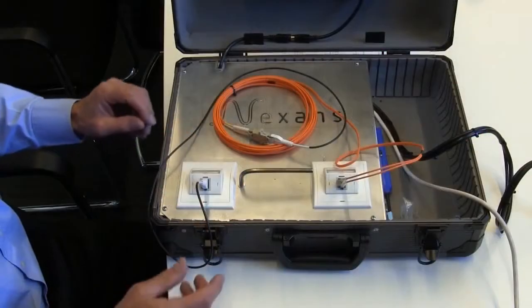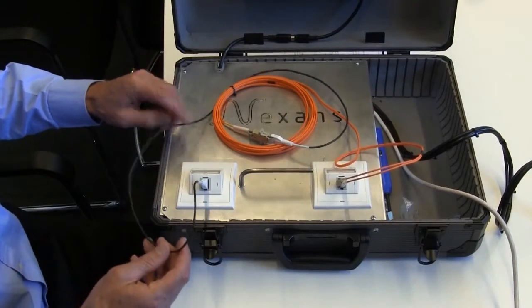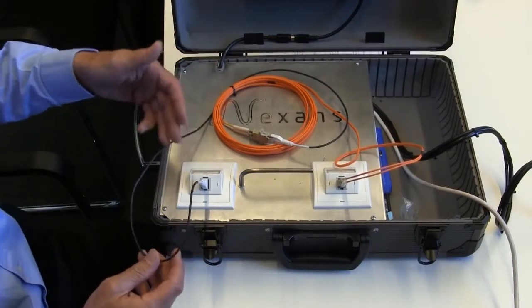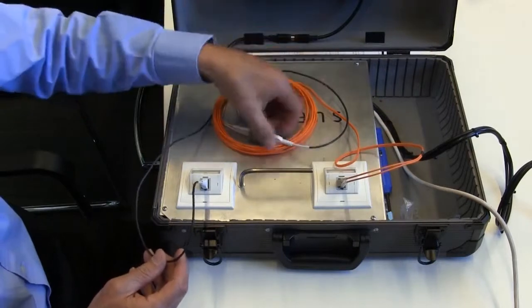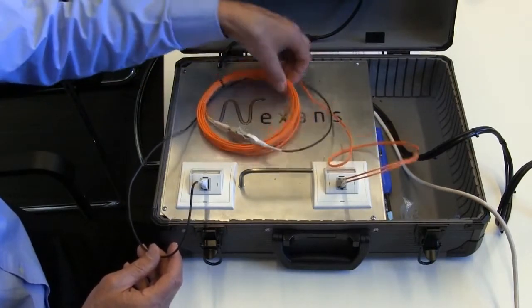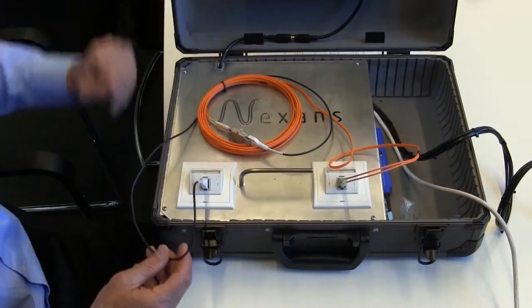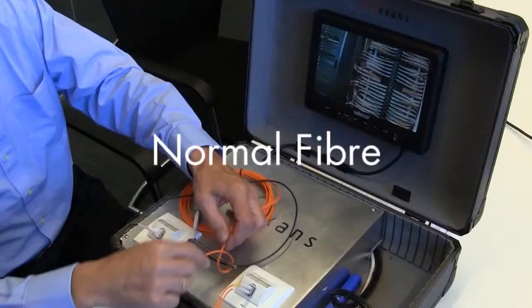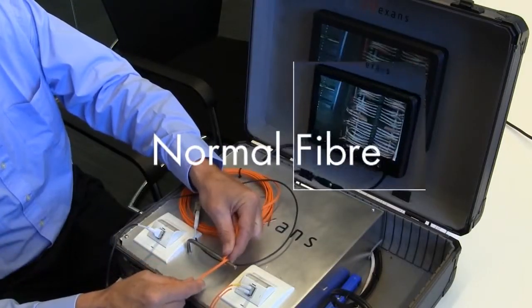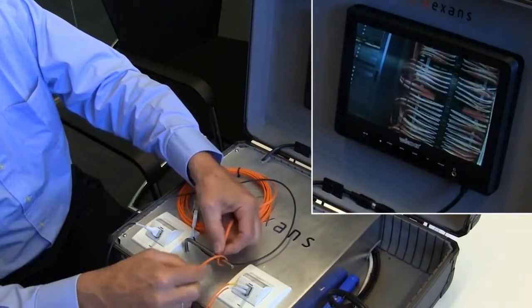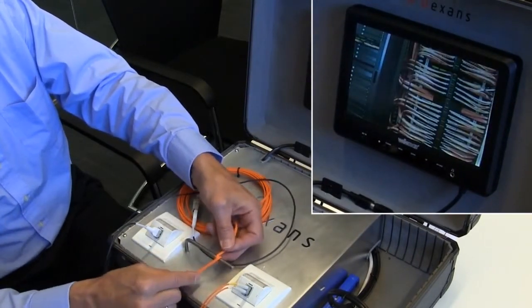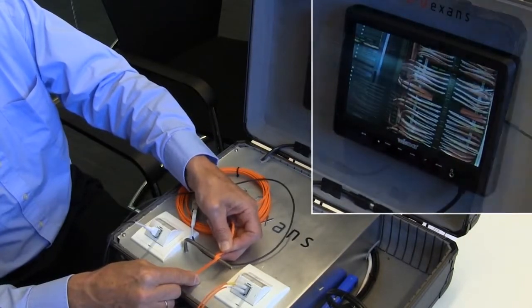In another test we have a video camera and a monitor connected together with a fiber optic link. In the link we have first a SlimFlex cord and then a normal cord. If we wrap one turn around the small mandrel with the normal fiber you see a degradation in the signal.